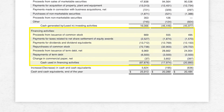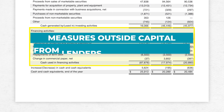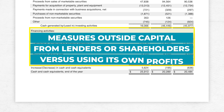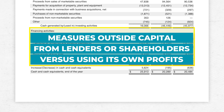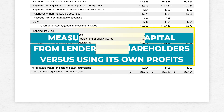Finally, the financing activities section tells you how much the business depends on outside capital from lenders or shareholders versus how much the business is being powered by its own profits.